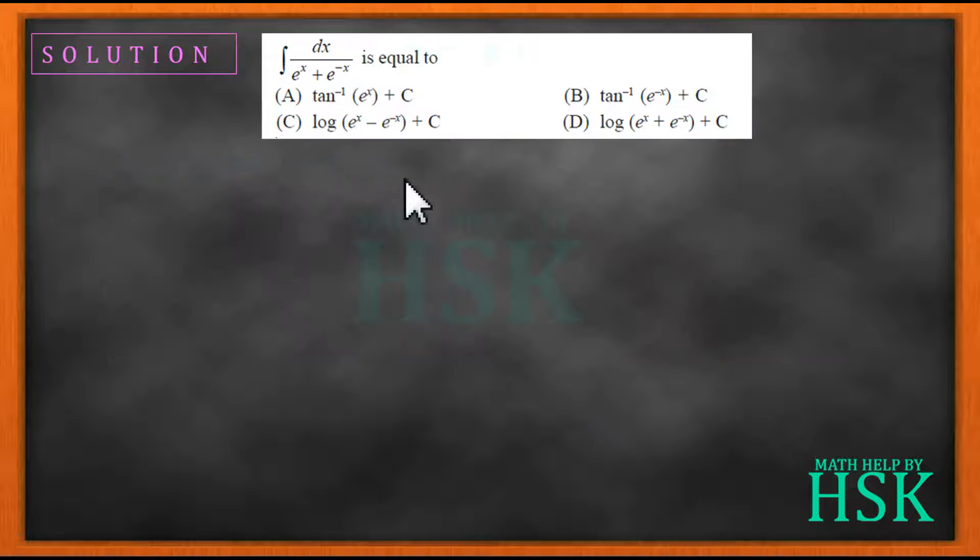Now to solve this question, first of all I take the given integral. And what I do in the first step, I write e to the power of minus x as equal to 1 upon e to the power of x like this. And on simplifying, that is taking LCM, I'm going to get e to the power of 2x plus 1 upon e to the power of x.